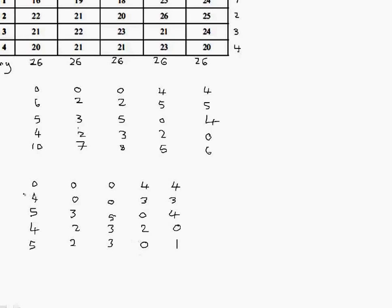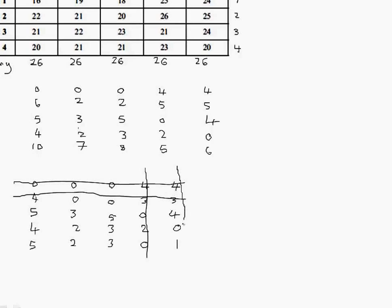We now look for the minimum number of lines to cross out all the zeros in the array. Generally, the best way to do this is to look initially for lines with the most zeros in. So, we've got a line here with three zeros. So, it would make sense to cross through there. We've now got a line down here with two. A line across here with two. And this line at the end.